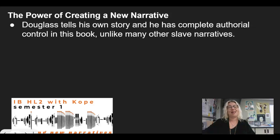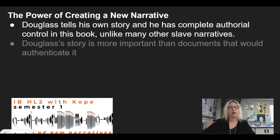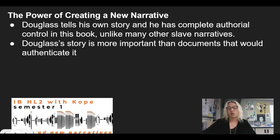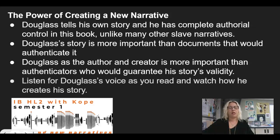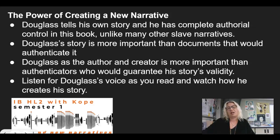We can see this in a lot of different ways. We talked about earlier how the documents that would authenticate his story are not as important in this slave narrative. It's instead the story itself that is more important. He is the author and the creator, and that is what's more important than authenticators who would guarantee his story's validity. So listen for Douglass's voice as you read and watch how he creates the story. He'll often tell you why he is writing about a certain incident or memory, or reflect on its meaning to you. These are all different ways that he's controlling the narrative.